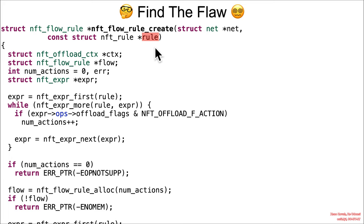This is the start of essentially a set of rules that are going to be iterated through. Consequently, there's going to be a variety of memory allocated to ultimately store those rules for longer-term usage. Go ahead and find the flaw.